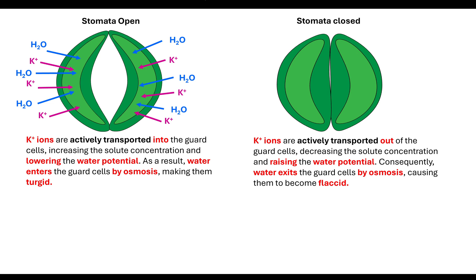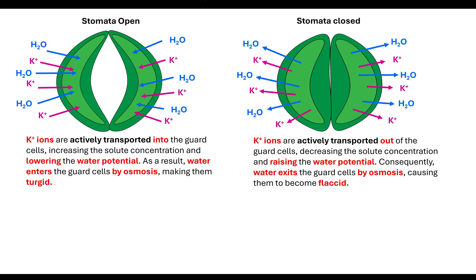To close the stomata, potassium ions are actively transported out of the guard cells, decreasing solute concentration and raising water potential. Water will then leave by osmosis down its water potential gradient. As the guard cells become flaccid, having lost that water, they move closer together and the stomata closes.